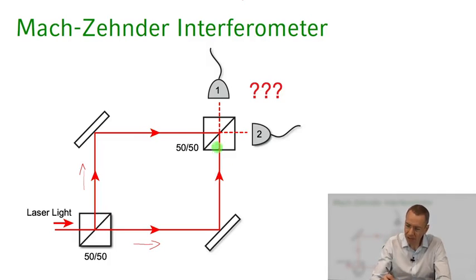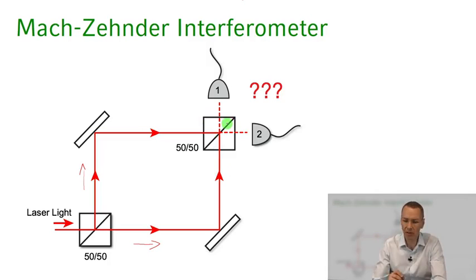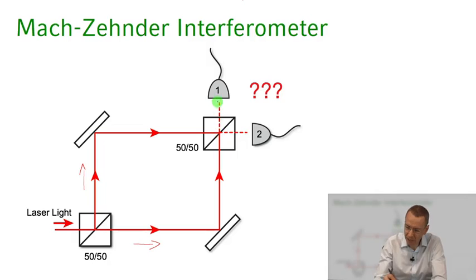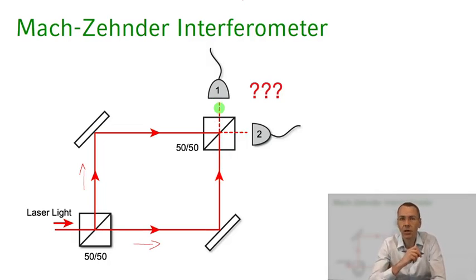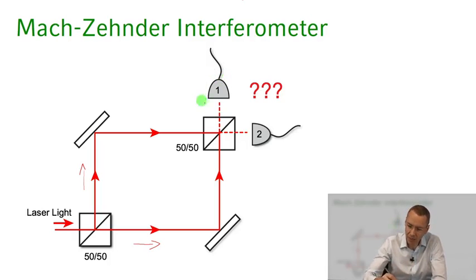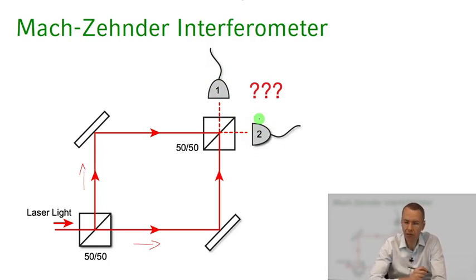The light comes again onto a 50-50 beam splitter where part of the light is transmitted and part is reflected. The question is: what are we going to see on detectors placed here that measure the intensity of the light coming out on each output port?